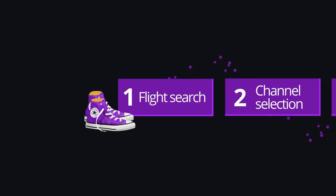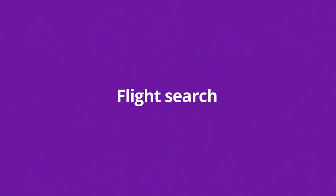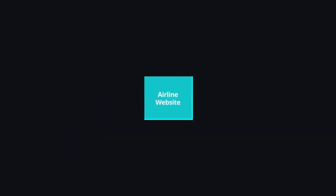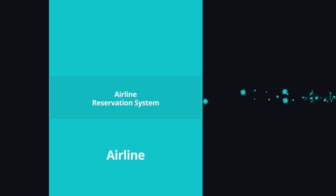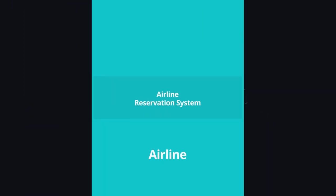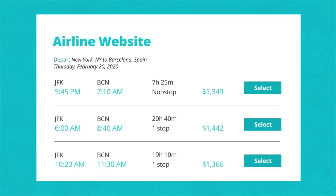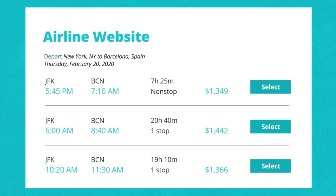Step 1: Flight Search. With an airline website, a flight search includes just two steps. The website checks a search request against the inventory data stored in the airline reservation system and returns the list of available options for a target city pair and date combination.